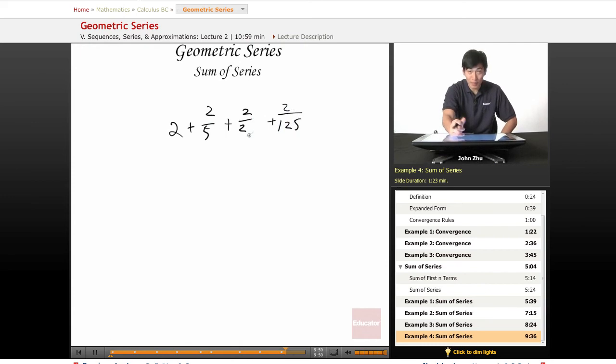So we see that right away the denominator increases as the numerator stays constant, which means soon our nth term will become very small. So we have a equals 2 here and r equals 1 over 5.